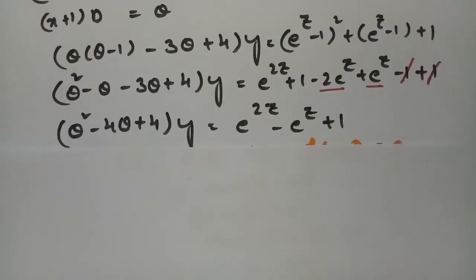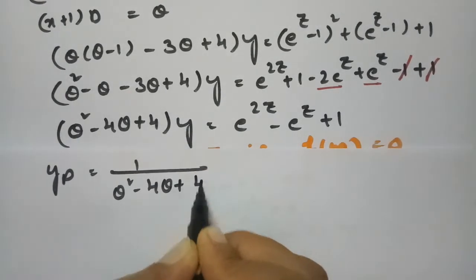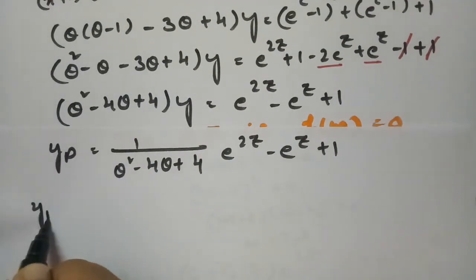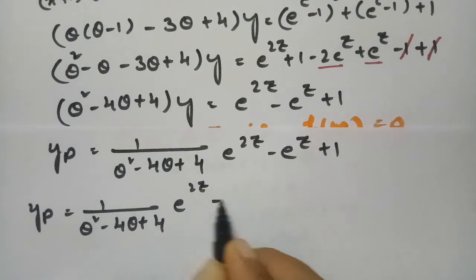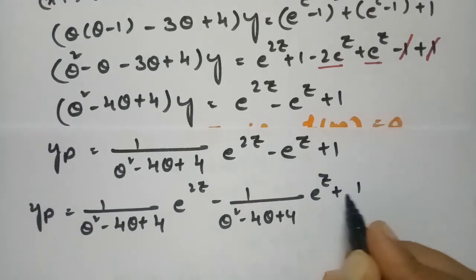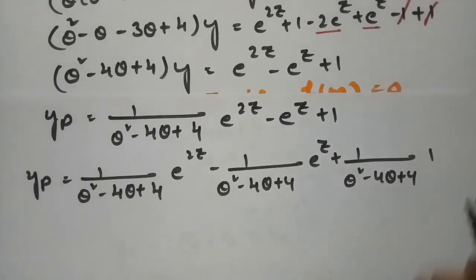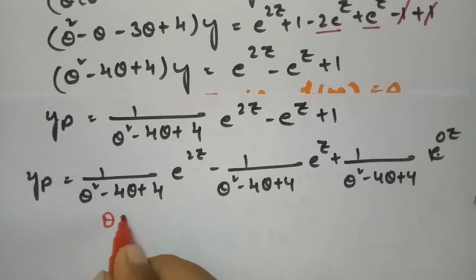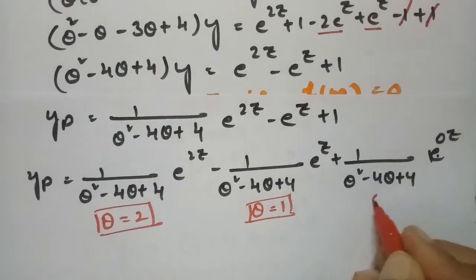Now for the particular integral: yp = [1/(θ² − 4θ + 4)] · (e^(2z) − e^z + 1). Splitting this into three parts: [1/(θ² − 4θ + 4)]·e^(2z) minus [1/(θ² − 4θ + 4)]·e^z plus [1/(θ² − 4θ + 4)]·1. Note that 1 = e^(0·z), so we substitute θ = 2 for the first term, θ = 1 for the second, and θ = 0 for the third.